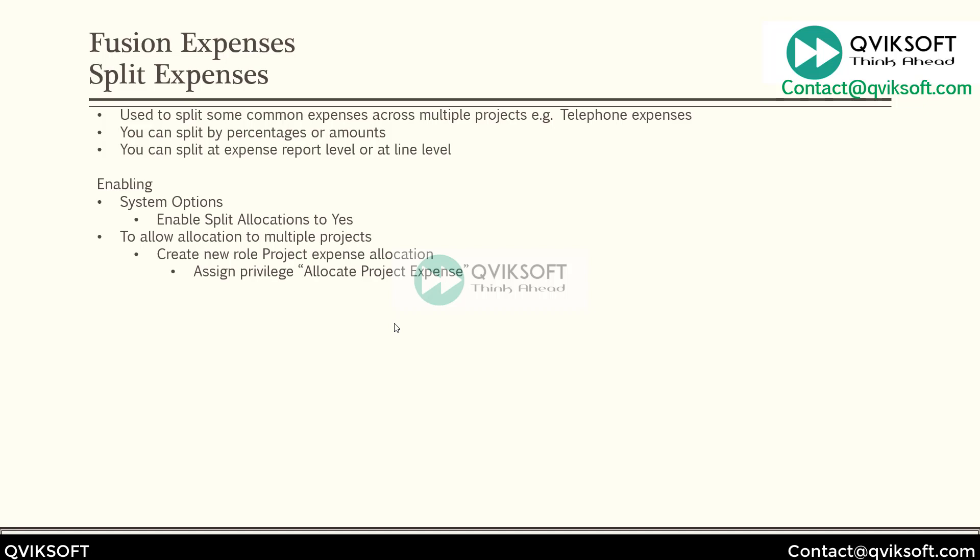If you want to allow users to split against multiple project tasks and organizations, then you should assign a privilege called 'Allocate Project Expense.' If you want to allow this to everybody, then whatever employee role you have, you can attach this privilege to that employee role. That means all users assigned that employee role will get this privilege. But if you don't want to give it to everybody, you can create a custom role.